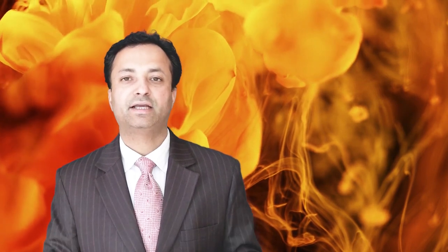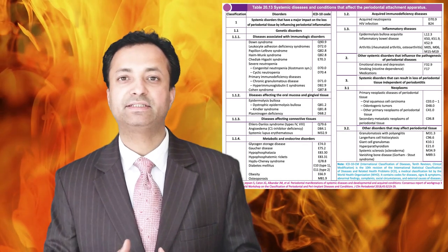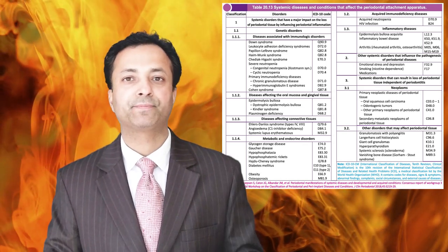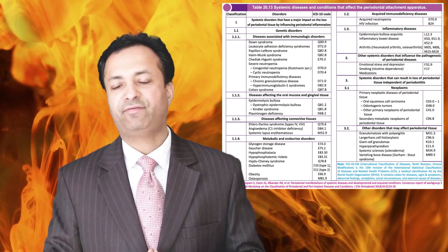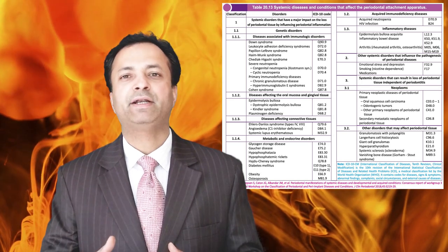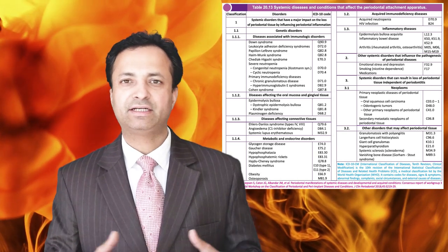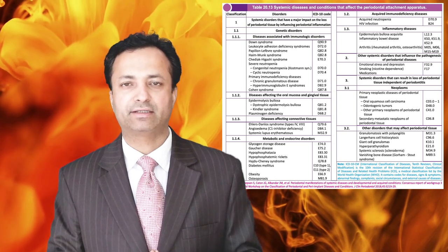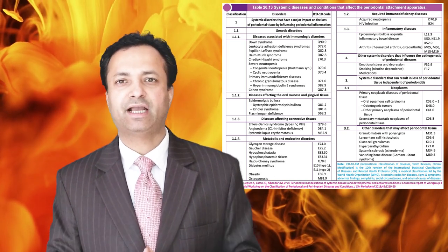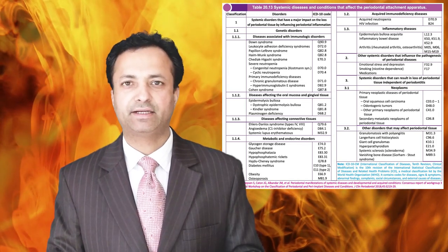Coming to the last category in periodontal diseases and conditions — other conditions affecting the periodontium — the first subclass is systemic diseases and conditions affecting the periodontal supporting tissues. Certain diseases may affect the periodontal supporting tissues independent of plaque-induced periodontitis, and these need to be identified by their ICD codes.